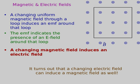Magnetic induction: a changing uniform magnetic field throughout a loop induces an EMF around that loop. In this picture, you've got a magnetic field coming out of the screen, and that square is a loop of wire. If the strength of the magnetic field is changing, it will induce a current — really it induces an EMF, an electromotive force like a voltage. If there's resistance, the EMF drives a current.